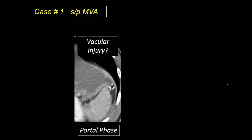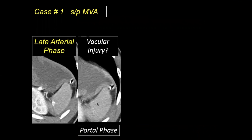Let's look at a couple of examples. On this case of MVA, the portal phase demonstrated a small amount of perisplenic fluid, slight irregularity of the parenchyma, and no obvious active bleeding. However, on the late arterial phase, note a small pseudoaneurysm that becomes isoattenuating on the portal phase and therefore invisible. This patient was treated with embolization.